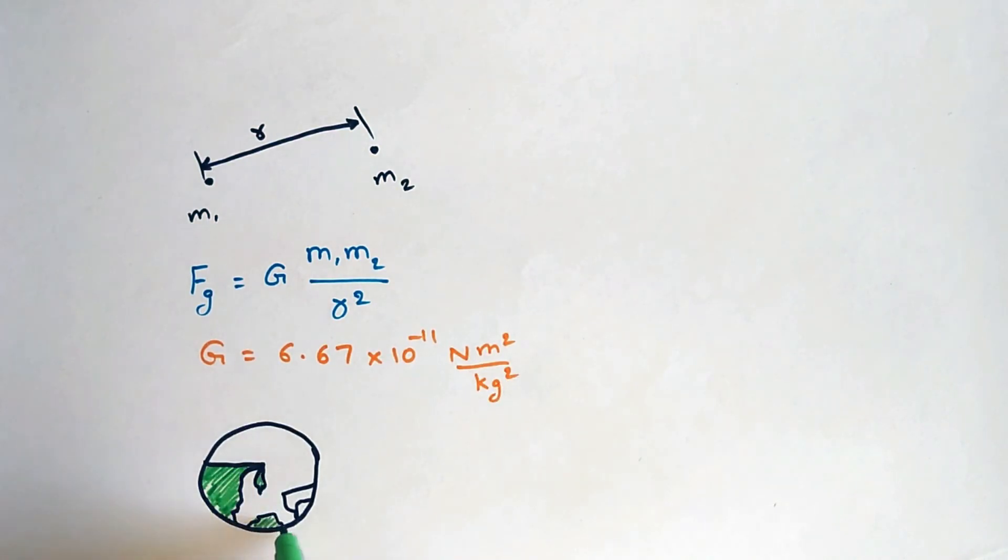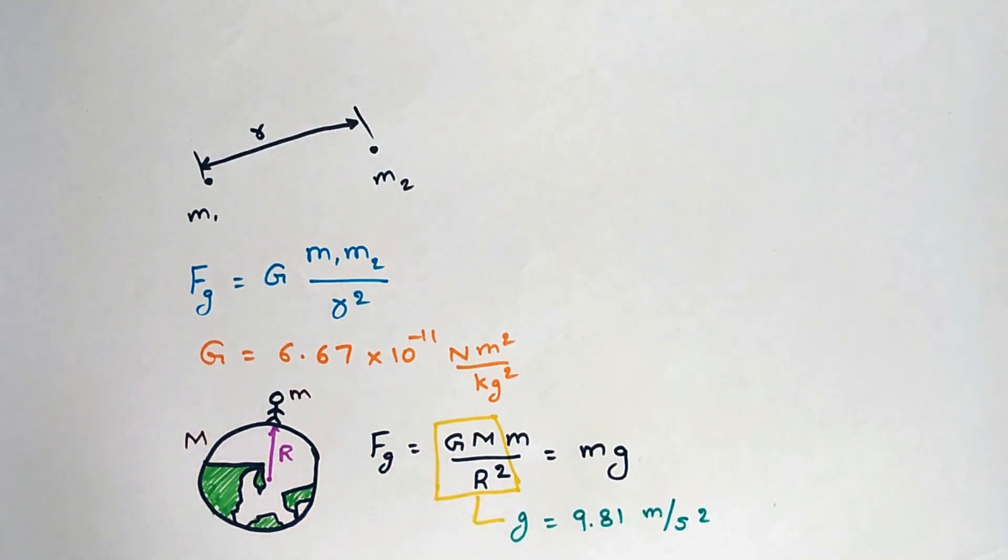Now, if you consider a man on earth which has a radius of r then the gravitational pull on the man by earth is equals to G m M by r square which acts towards the center of the earth and G M by r square is constant for the planet earth which is equals to acceleration due to gravity equal to 9.81 meter per second square.